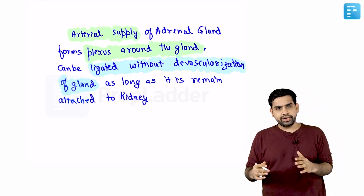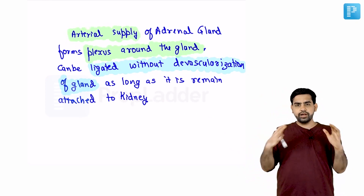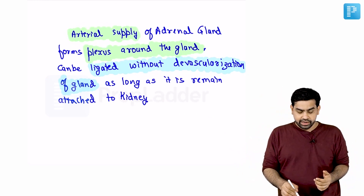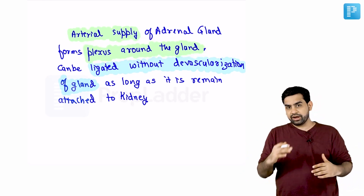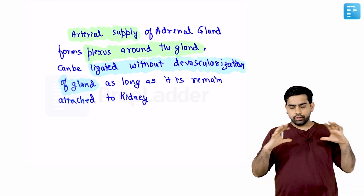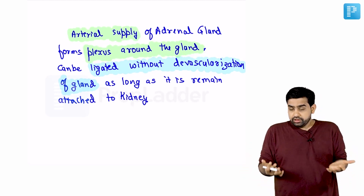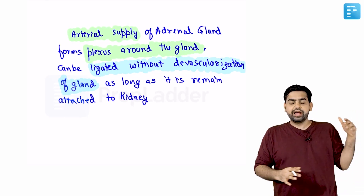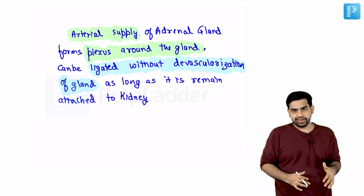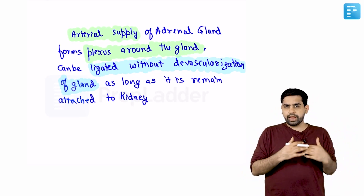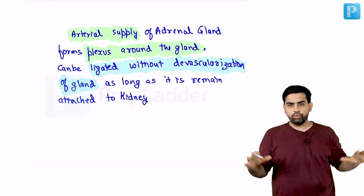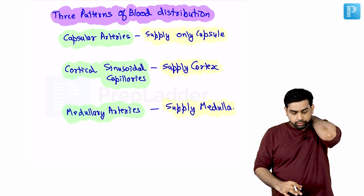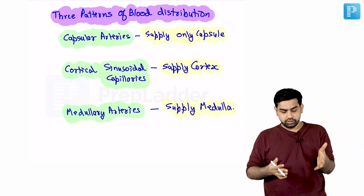Unlike the kidney, which has an end artery, the adrenal arterial supply forms a plexus around the gland. Because of this plexus and its many collaterals, even if you ligate these arteries it will not cause devascularization of the adrenal gland. That is the reason why you can perform a partial adrenalectomy — the complex collateral plexus will continue to supply the adrenal gland even if a couple of arteries are ligated.